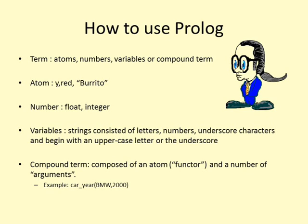The number of arguments is called the term's arity. An example of a compound term is car_year(BNW, 2000).